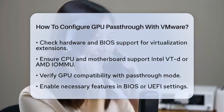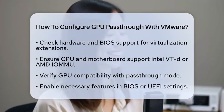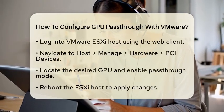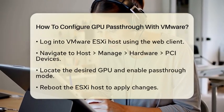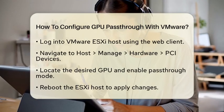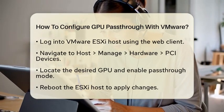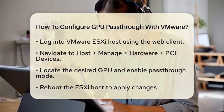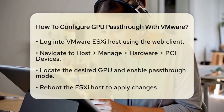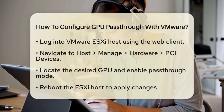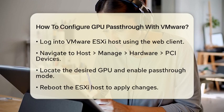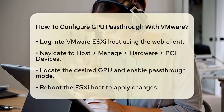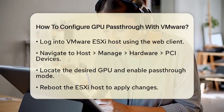Next, prepare your VMware ESXi host. Log into the VMware ESXi host using the web client. Navigate to the section that says Host, then Manage, followed by Hardware, and finally PCI Devices. Here you will find a list of PCI devices. Locate the GPU you want to pass through, select it, and click on Toggle Pass-Through to enable pass-through mode for that device.